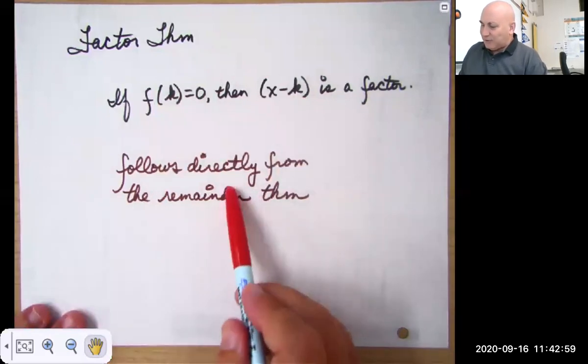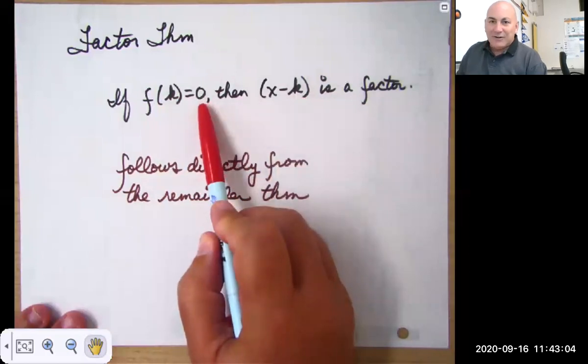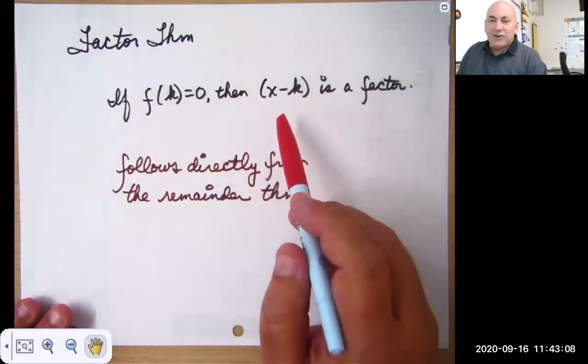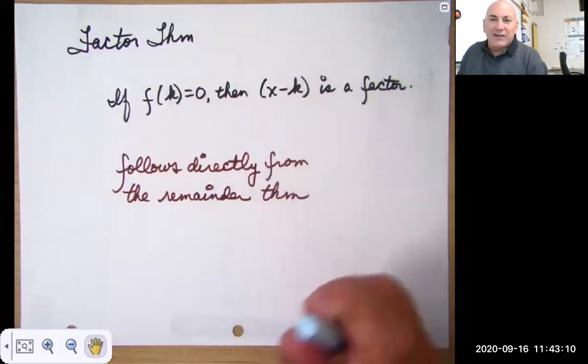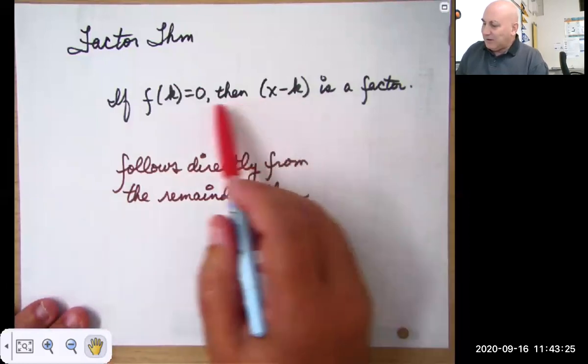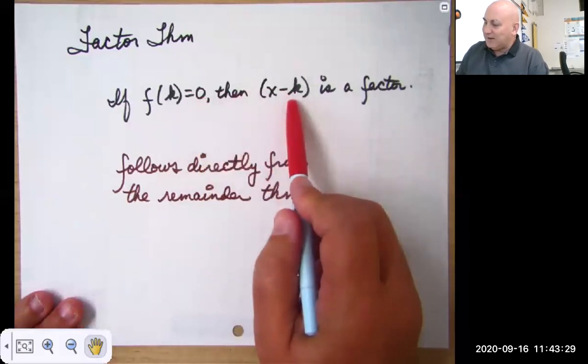And that follows directly from the remainder theorem. If there's no remainder, then dividend divided by a divisor is going to give you a quotient, which means the quotient times the divisor equals the dividend. So that would mean that if you get a zero remainder, then x minus k is a factor.